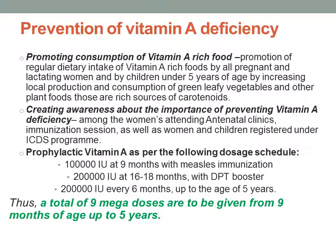The first dose of vitamin A is started at 9 months, along with measles immunization, at 1 lakh international units. From 16–18 months, 2 lakh international units are given with the DPT booster dose. Thereafter, 2 lakh international units are given once every 6 months up to 5 years. In total, the child receives 9 mega doses of vitamin A from 9 months to 5 years of age.